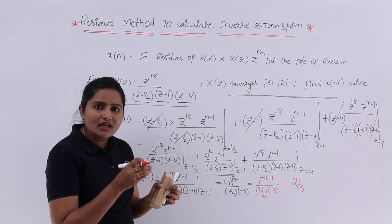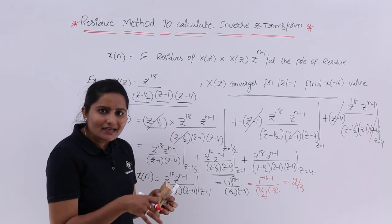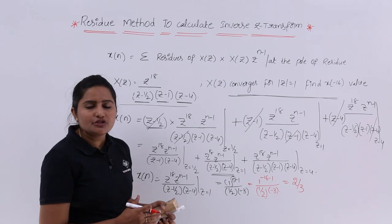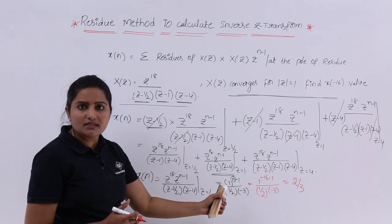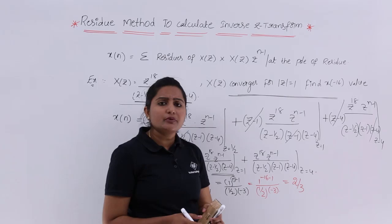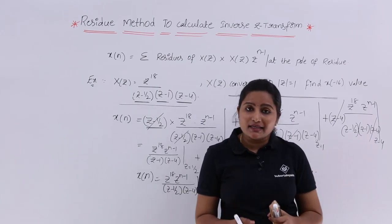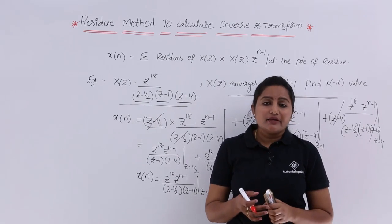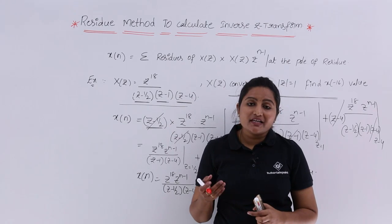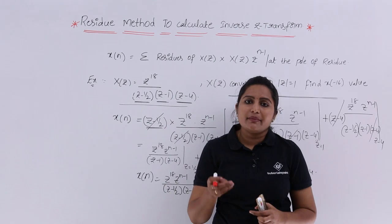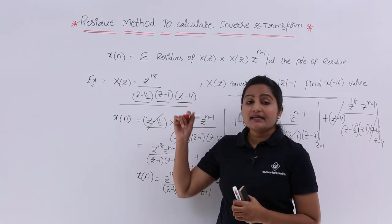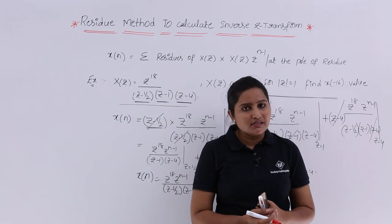According to the ROC given, however many residues are in that range, only those residues need to be considered for the final answer. This residue method is very important when they are asking for a particular sample of a signal by giving the Z transform of the signal.